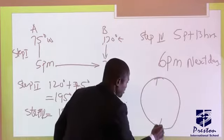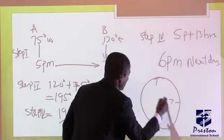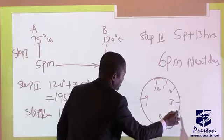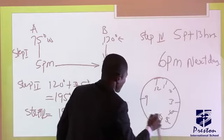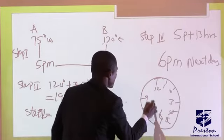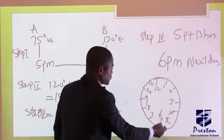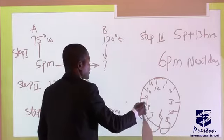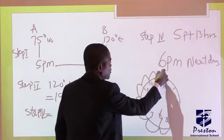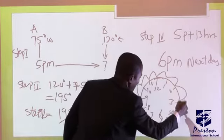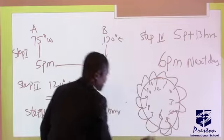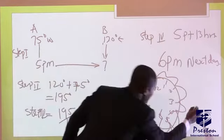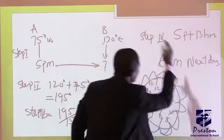It's always advisable to use a clock to do the addition. When you draw your clock with the numbers, you start from 5 p.m. and you are adding 13 hours: 1, 2, 3, 4, 5, 6, 7, 8, 9, 10, 11, 12, 13. You know you are at 6 p.m. because you have crossed 12, so the time will be 6 p.m. next day.